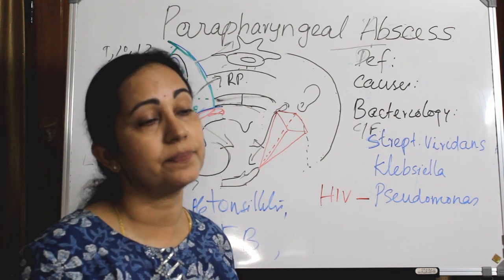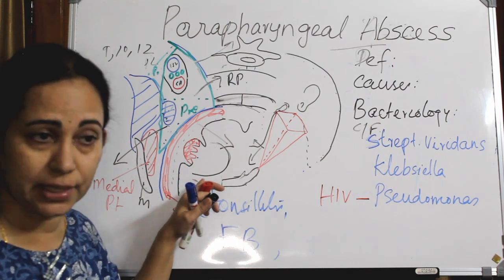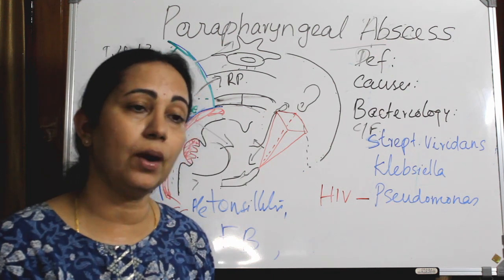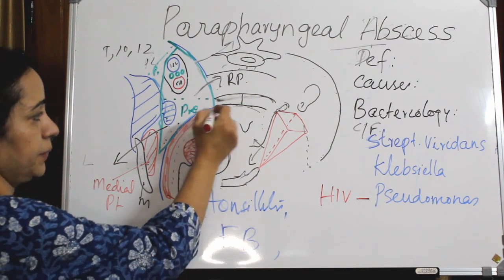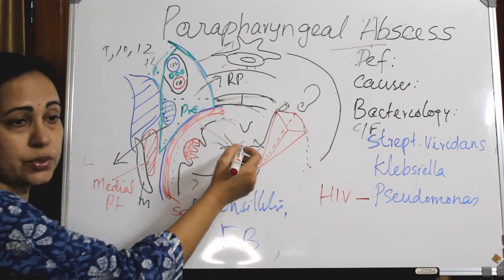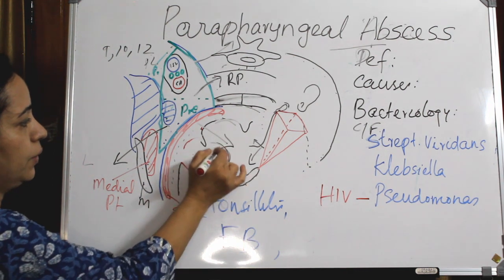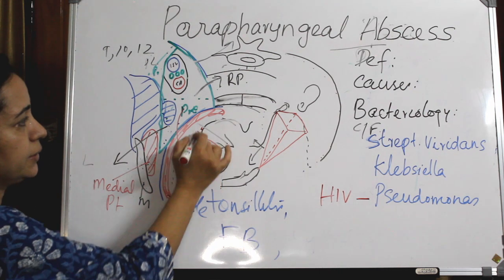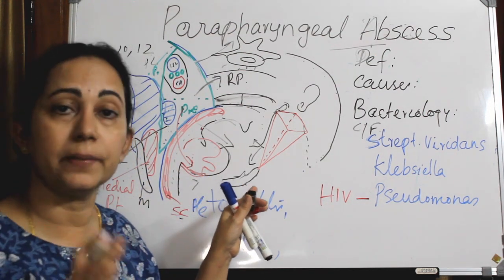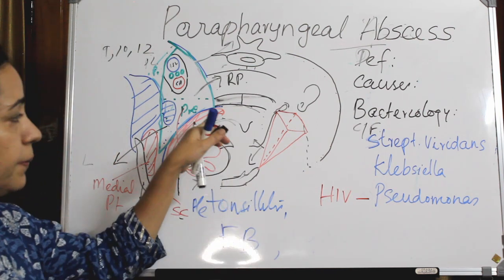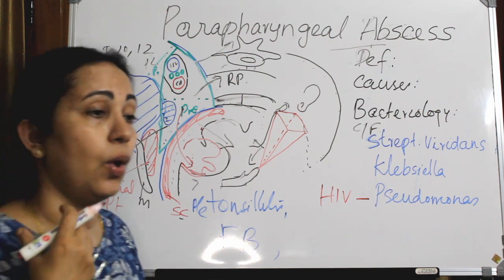The main difference between quinsy and a tonsillar bulge caused by parapharyngeal abscess: in quinsy, there is more edema of the soft palate and the bulge is more in the upper pole of the tonsil. In parapharyngeal abscess, the bulge is more in the lower pole and edema of the soft palate is comparatively less.